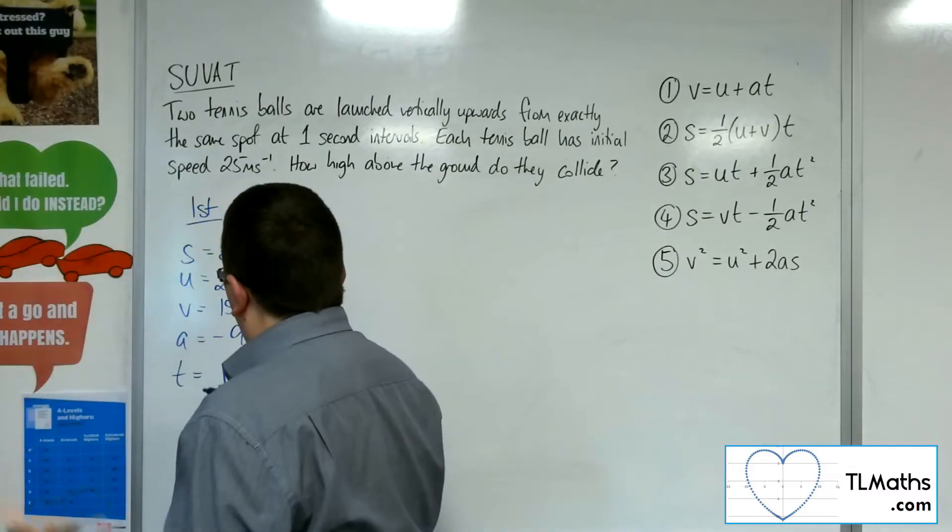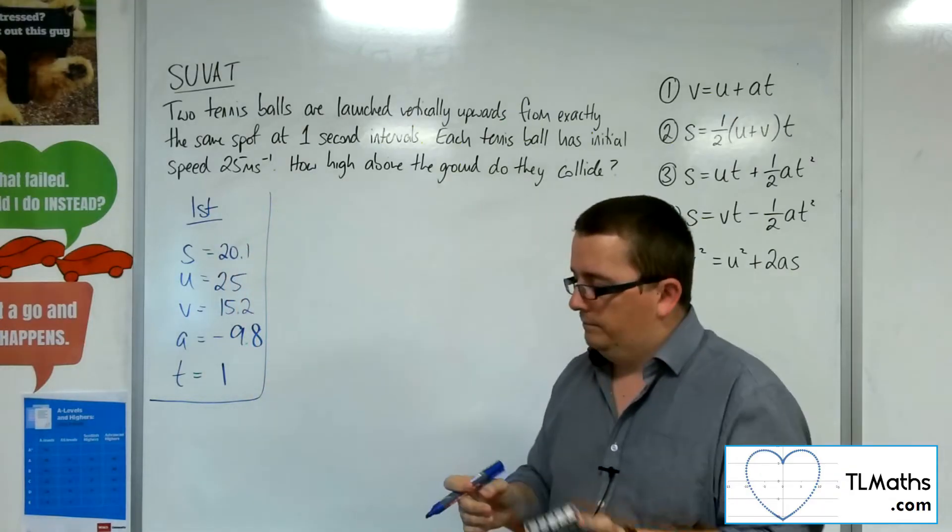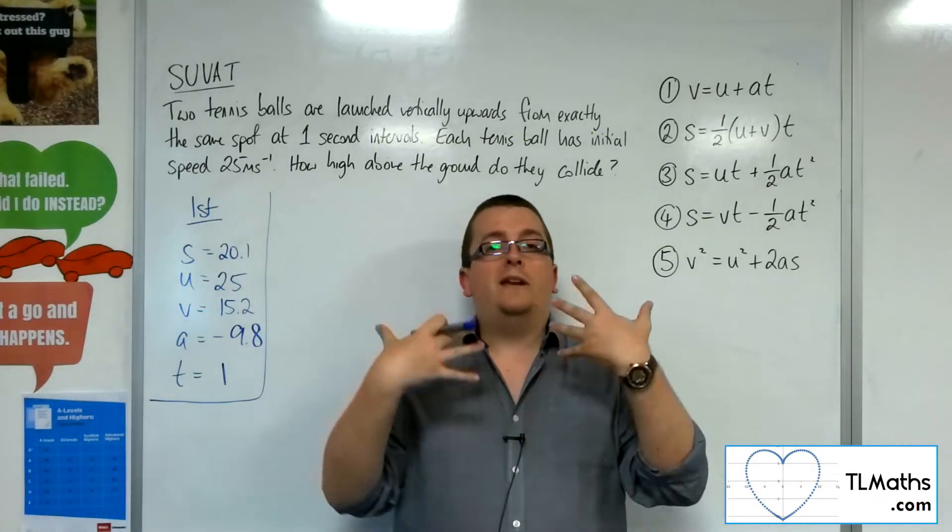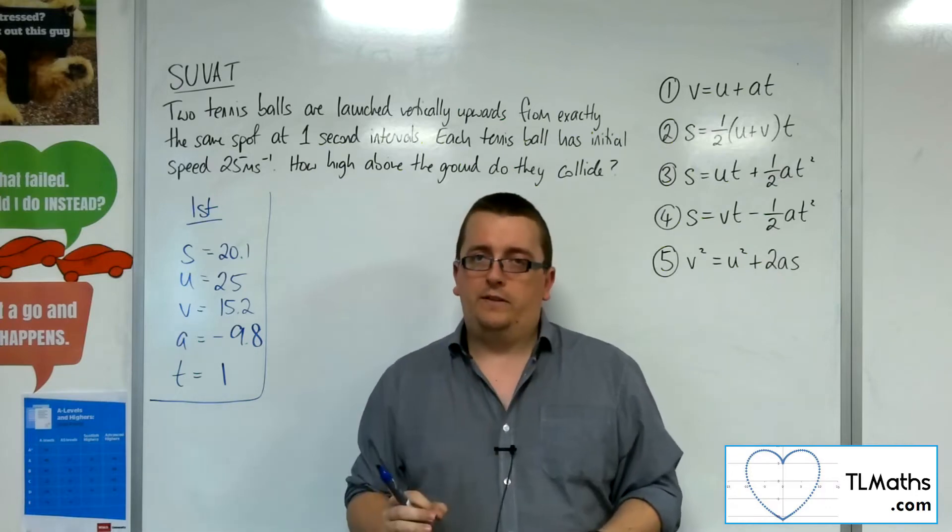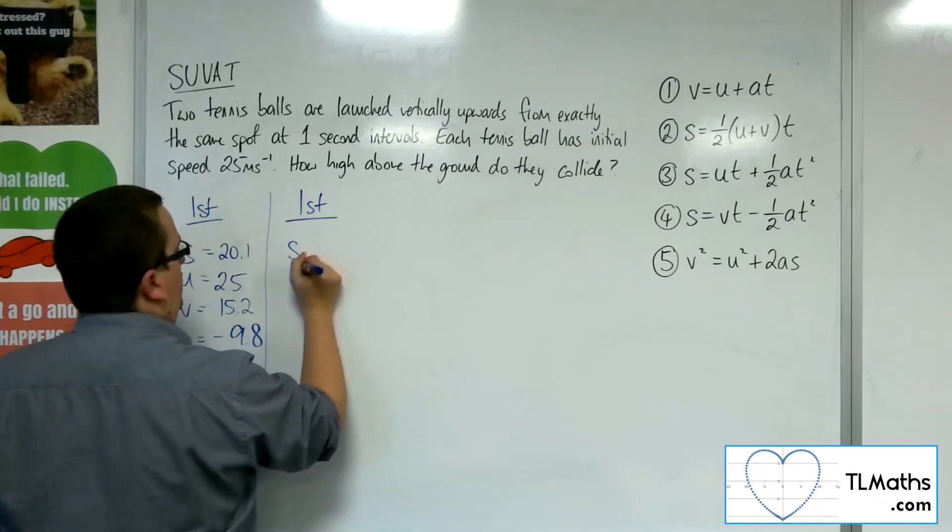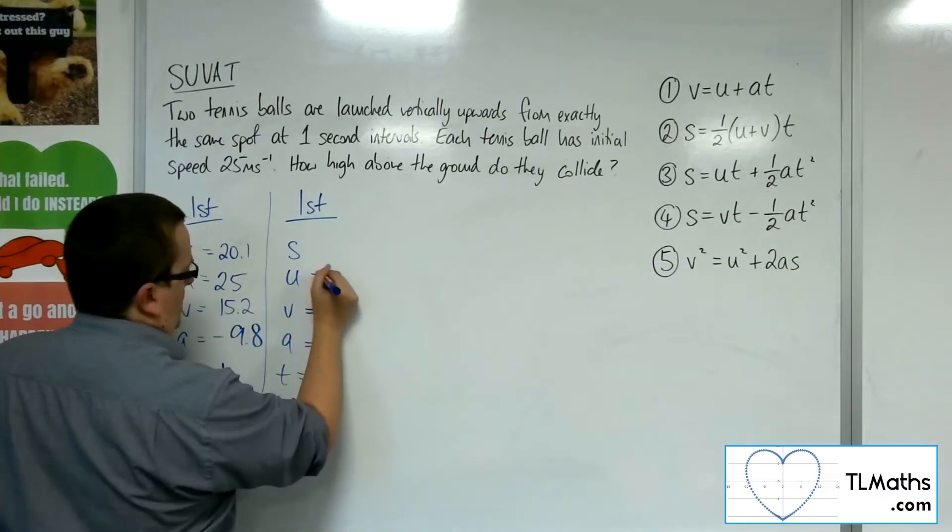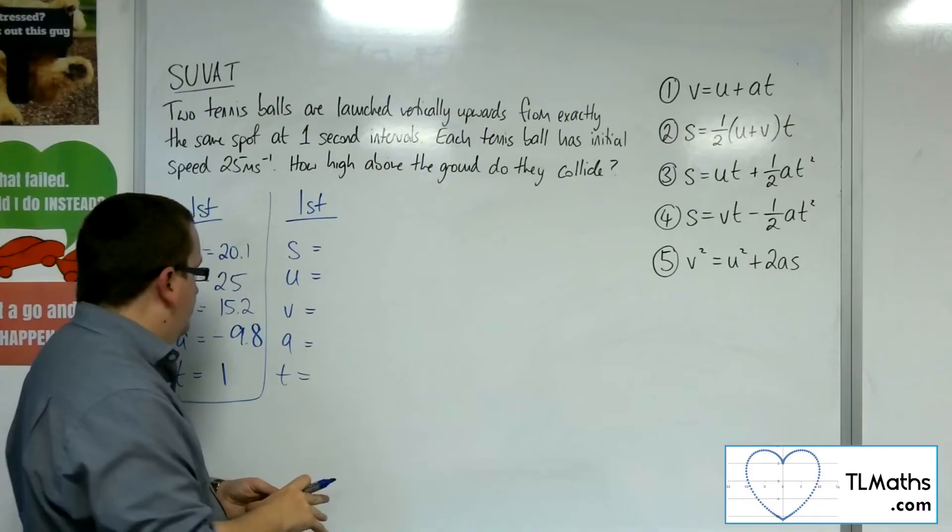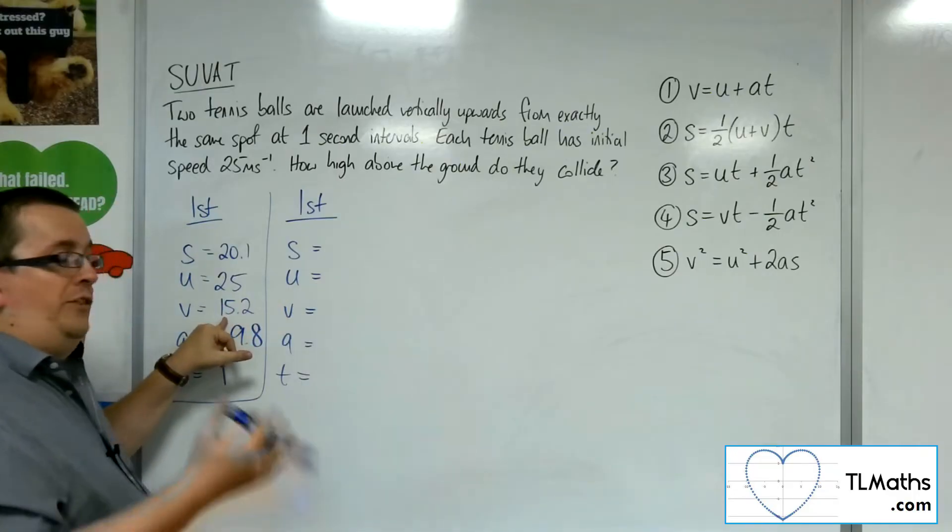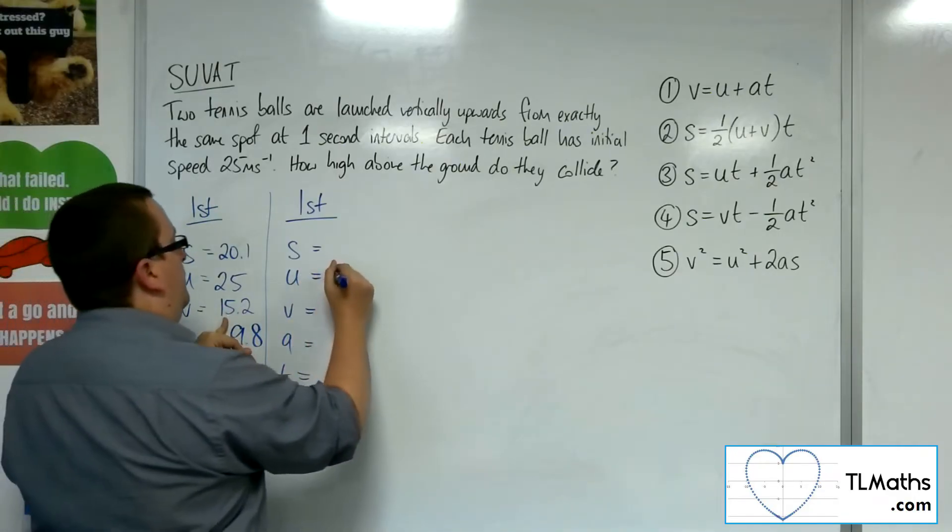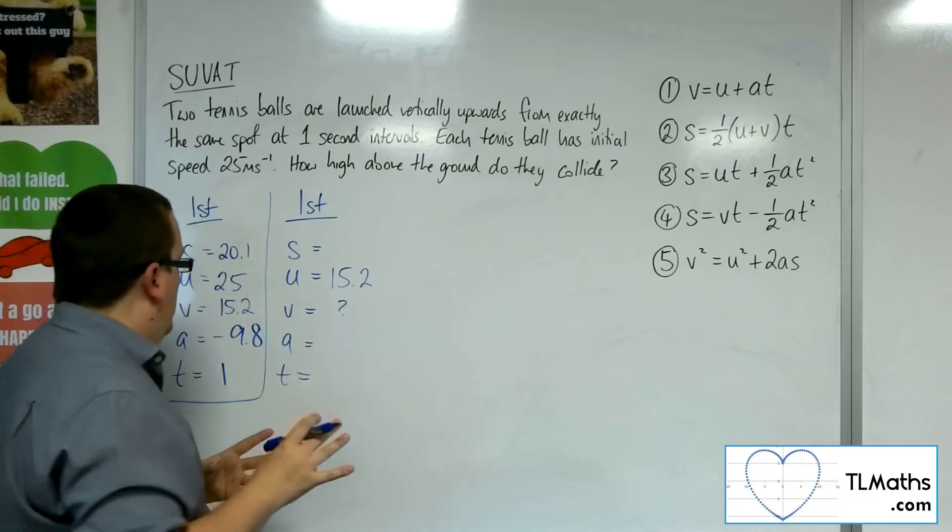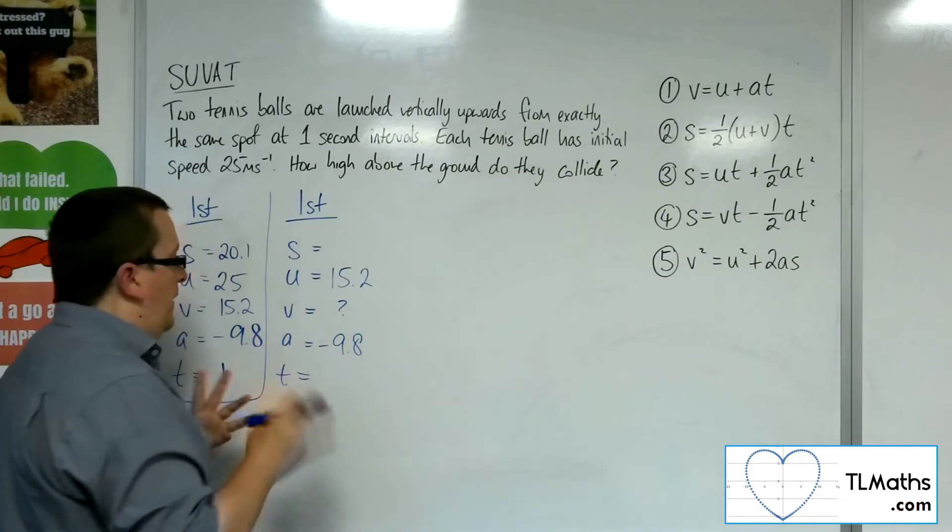Right, now, let's box that information off. So now, I'm going to model the particles from where they currently are, after that one second. So I've got the first ball. Its initial velocity now, after the one second, is the final velocity that we reached here, the 15.2. Now, I don't know the final velocity when those two balls are going to hit. I know that the acceleration is going to be minus 9.8.